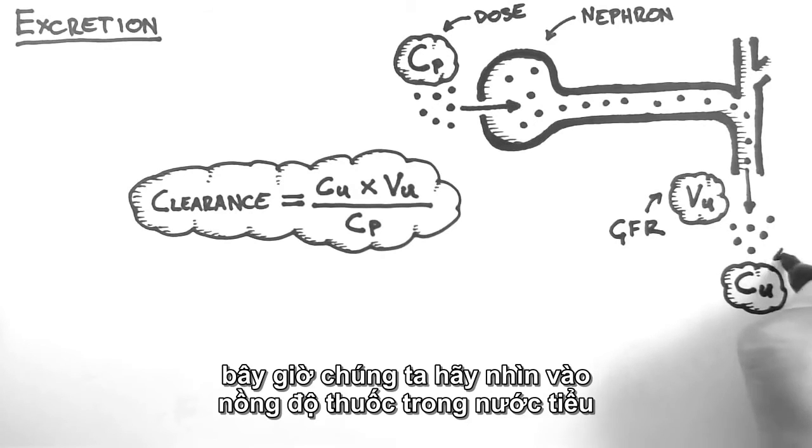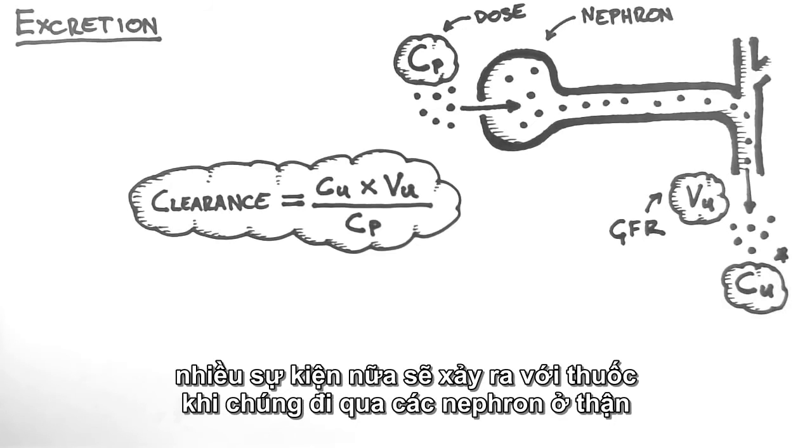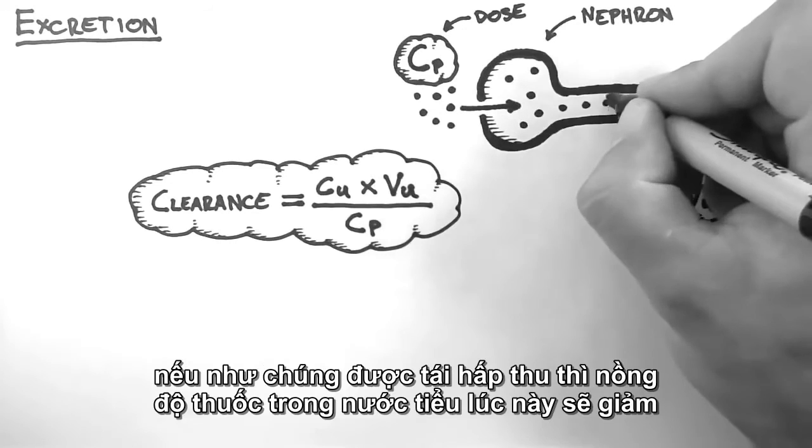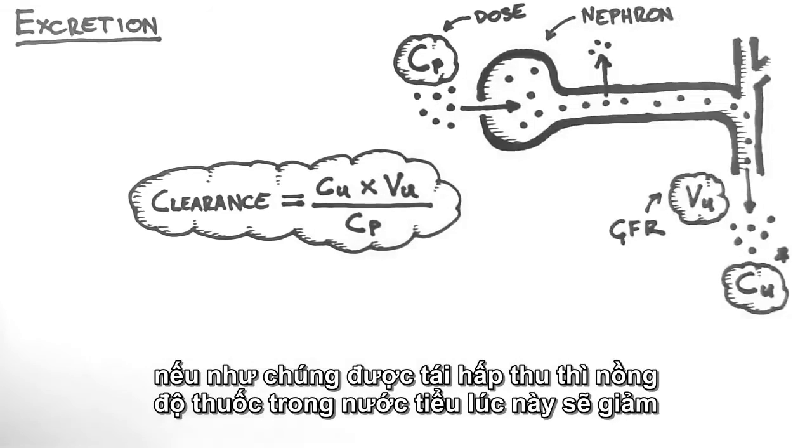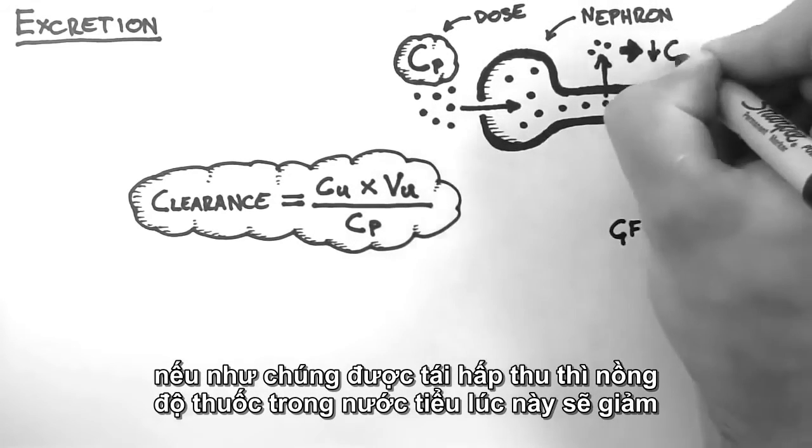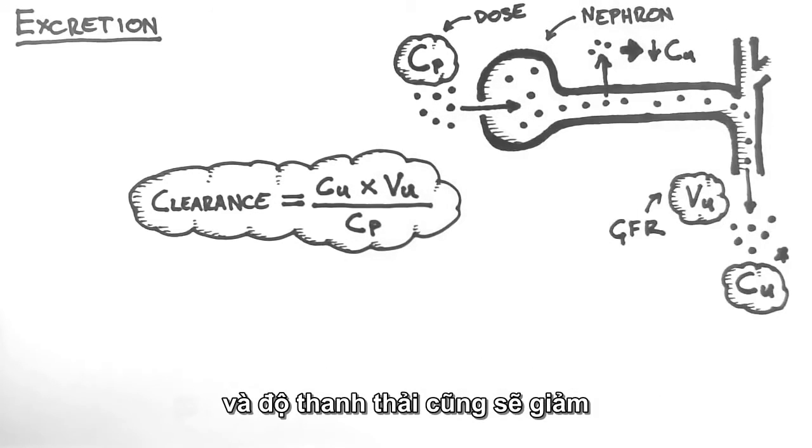Now let's look at the concentration in the urine. Different things can happen to drugs as they pass through the nephron. If they are reabsorbed, then the concentration in the urine will decrease and the clearance of that drug will be reduced.